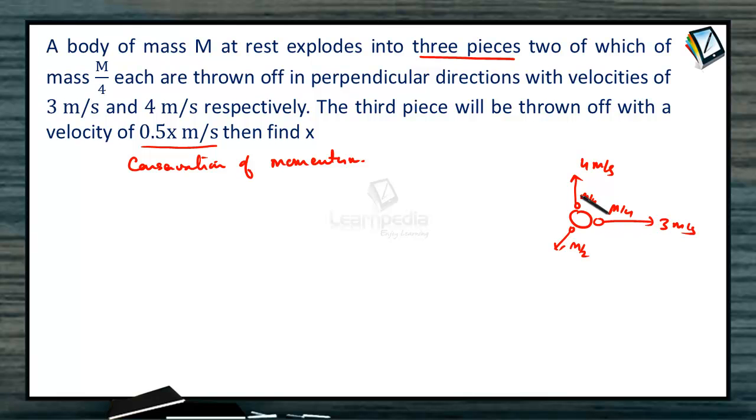So let us take the resultant momentum: 3M by 4 whole square plus 4M by 4 whole square should be equal to M by 2 into v. So root of 9M square by 16 plus M square is equal to M by 2 into v.